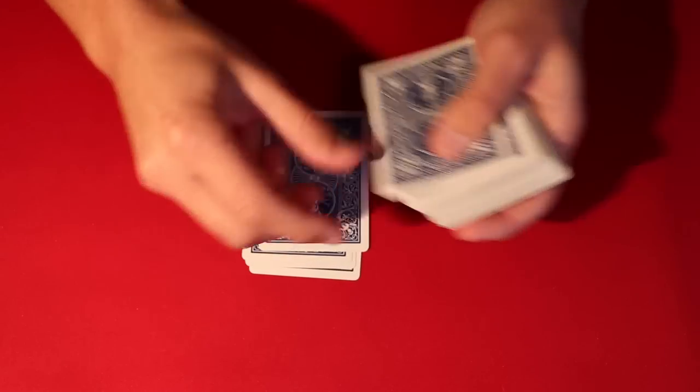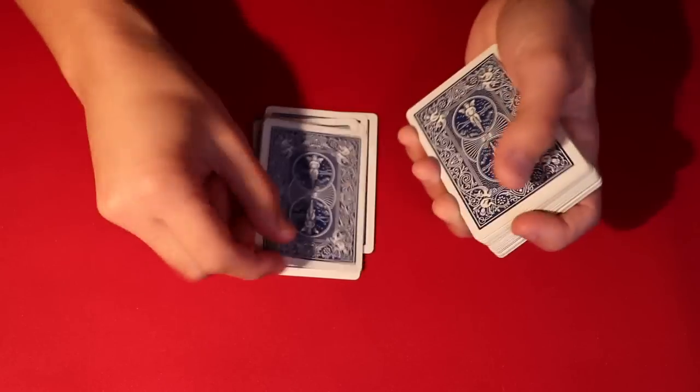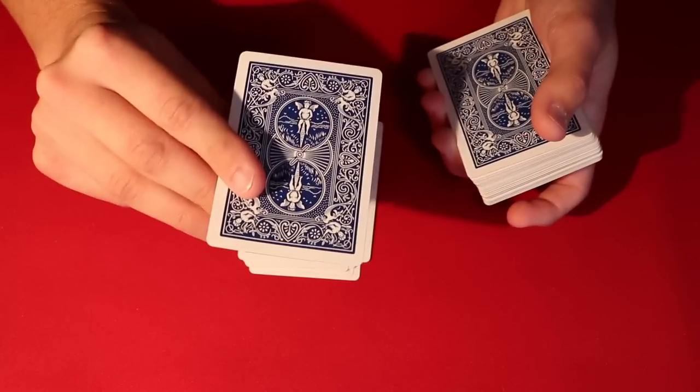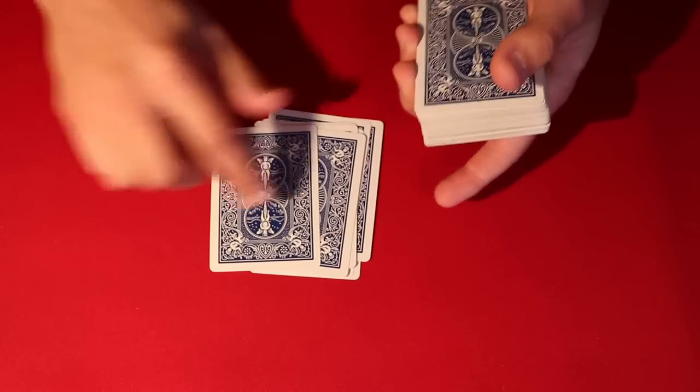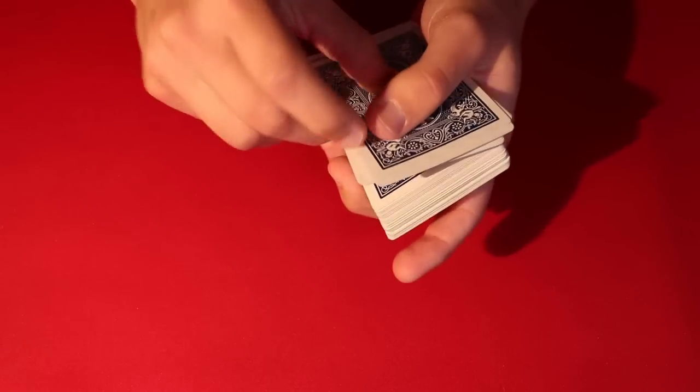So essentially the way it works is let's just do 10 so you get the general idea. Essentially their card is going to be on top of the deck right. So let's say they say 10. 1, 2, 3, 4, 5, 6, 7, 8, 9. You grab the 10th card, you show it to them. It's not their card, you put it on this pile. And now you put it on top.